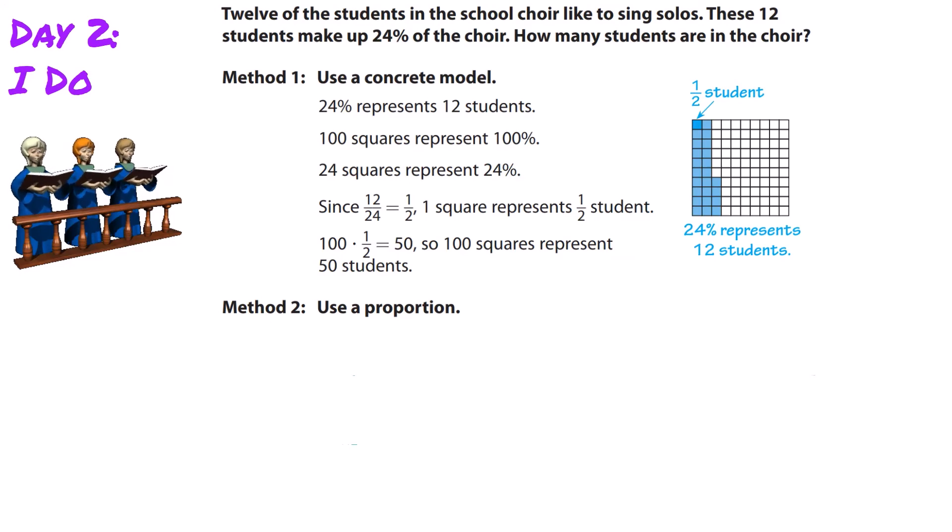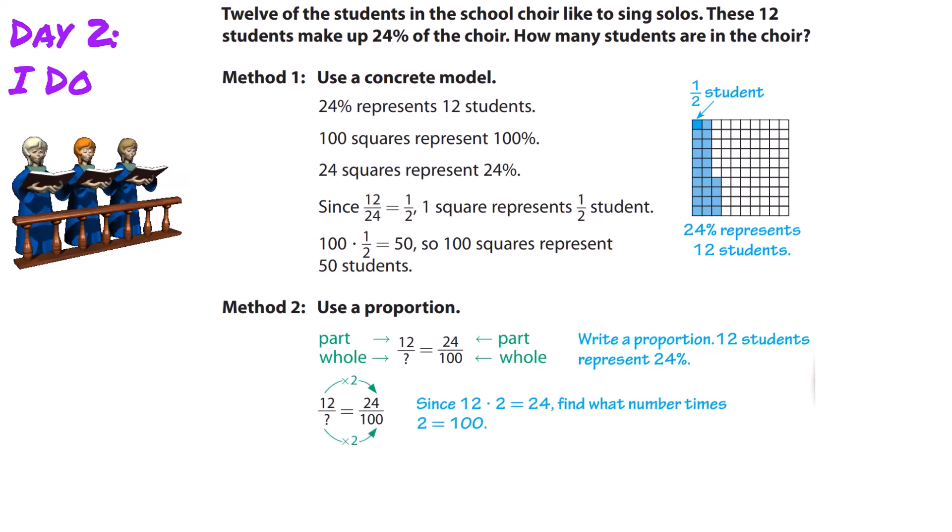Method two: Let's set up a proportion. We have 12 over a missing part equals 24 over 100. Write the proportion: 12 students represent 24%.